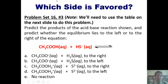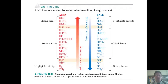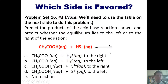Let's take a look at this problem. Predict the products of the acid-base reaction shown and then predict whether the equilibrium lies to the left or the right of the equation. In order to do this, you'll need the Ka table I'm about to show you — please pause, take note of it, and then I'll show you the table. I invite you to do this on your own, and if you like, you can click the link to a separate video where I show you how to do it on the board.